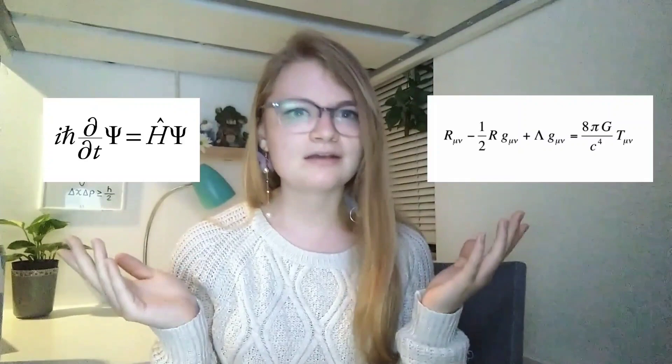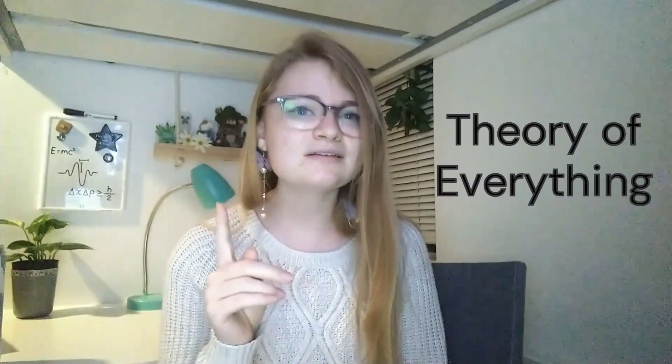Quantum mechanics and general relativity are the two theories that basically make up our entire universe, but when we try to marry these two theories together, things stop making sense. This has led physicists to try and come up with a theory of everything, which would be one singular theory that satisfies both quantum mechanics and general relativity.